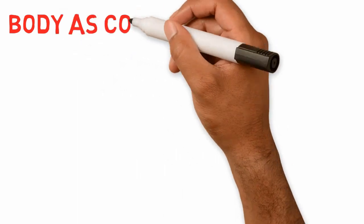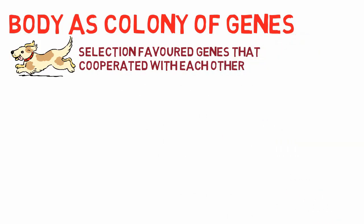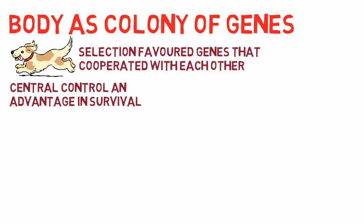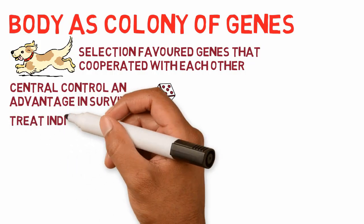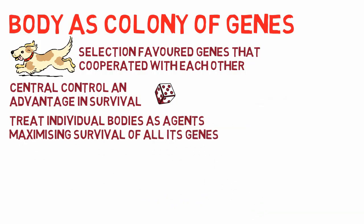Dawkins describes the body as a colony of genes. Although the behavior of survival machines seems individual, as a human or animal moves as a coordinated unit, he argues the communal nature is unrecognizable because selection has favored genes that cooperated with each other. Central coordination is advantageous in the high-stakes competition for survival, and it is convenient to treat individual bodies as agents trying to maximize the survival of all their genes in future generations.